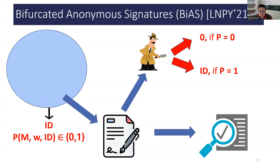Since the user knows P in advance, it can control its privacy and accountability. In the traceable case, it can decide whether to sign the given message or not. On the other hand, the authority can also ensure that signers of all traceable signatures will be kept accountable. So BAS seems to have provided a nice solution to the tension between privacy and accountability.